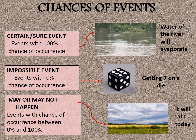Whenever we talk about the chances of occurrence of any event, we categorize events into three possibilities. The first category is a certain or sure event — an event which has a 100% chance of occurrence and will definitely occur. An example is that the water of a river will evaporate; this is something that will surely happen.